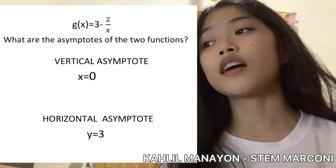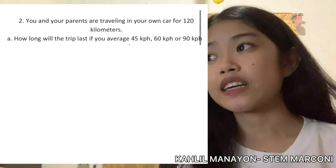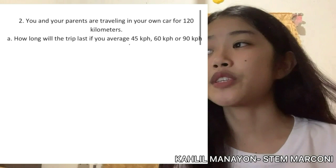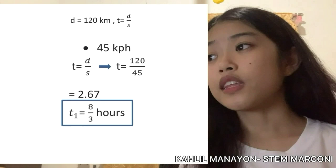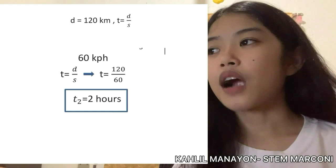Problem number two: you and your parents are traveling by car for 120 kilometers. How long will the trip last if you average 45, 60, or 90 kilometers per hour? We have distance equal to 120 kilometers, so we use the formula t equals d over s. Starting with 45 kilometers per hour, we substitute: t equals 120 over 45, and the answer is 8 over 3 hours, which is t sub 1.